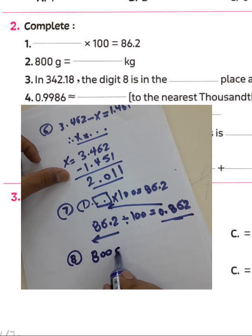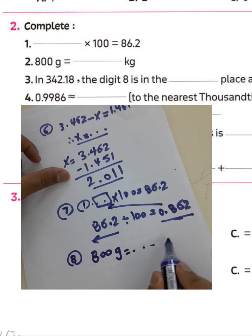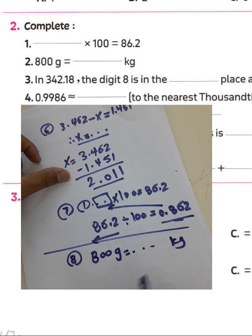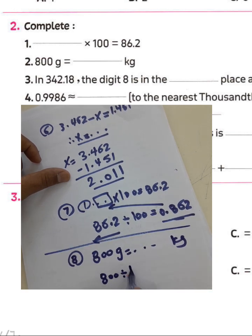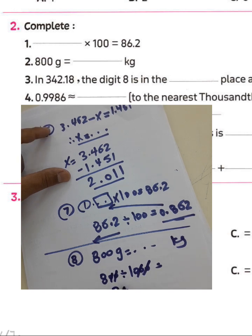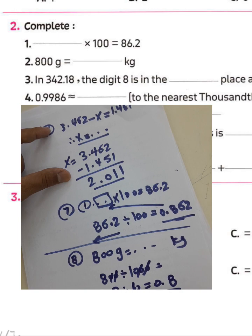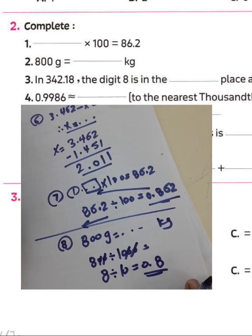Question eight: 800 grams equals how many kilograms? To convert from grams to kilograms you must divide by 1000. Cancel the double zeros and 8 divided by 10 gives 8 tenths, so the answer is 0.8 kilograms.